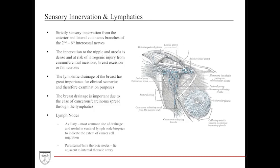The lymphatic drainage of the breast is also important, especially when discussing malignancies. Cancers — especially carcinomas of the breast, both ductal and lobular — can usually drain through the lymphatic system into the axillary lymph nodes, which is important for clinical diagnoses. The lymph nodes for the breasts are mostly composed of the axillary nodes as well as the parasternal or intrathoracic nodes.